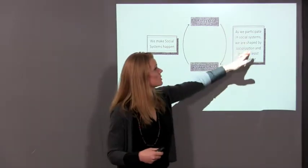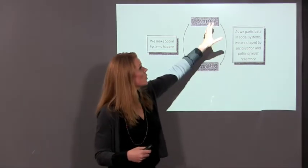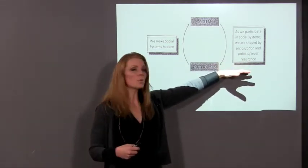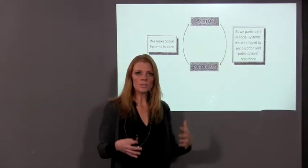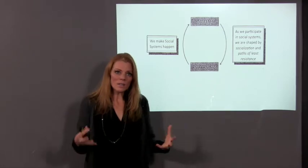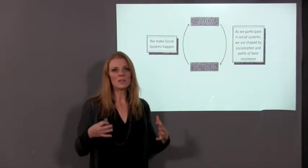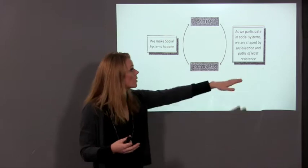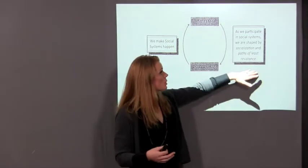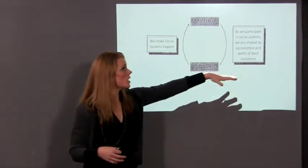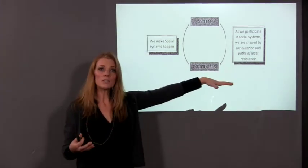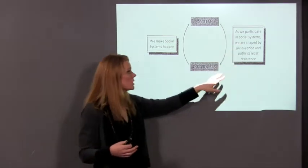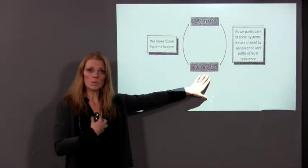This social system creates many of our implicit biases. The environment in which we're fostered and raised — the implicit bias is kind of intrinsic to this environment. As we participate in social systems, we're shaped by the socialization and the path of least resistance within that social system. And these social systems then create us as individuals.